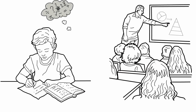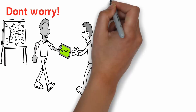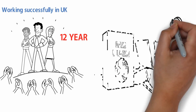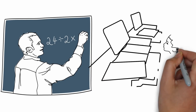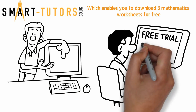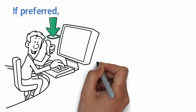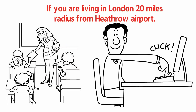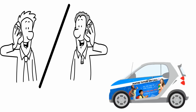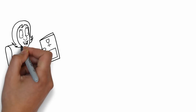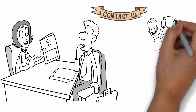Is your child weak in mathematics? Do you spend much time at work and struggle to find a tutor? Don't worry — Smart Tutors brings you an amazing blend of mathematics coaching experience by tutors working successfully in the UK for more than 12 years. Our website provides comprehensive curriculum-aligned mathematics content for toddler age 5 to teenager age 18. Download three worksheets for free, or access thousands of worksheets and sample papers for only £2.50 per month. Private tutoring at home is available within 20 miles of Heathrow Airport, and online tutoring is also available. Book your session now.